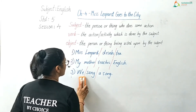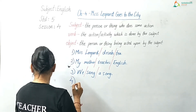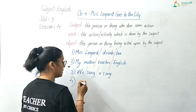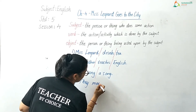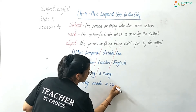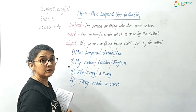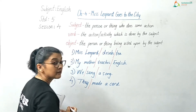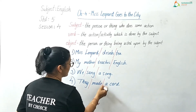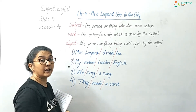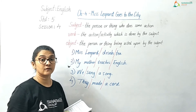Let us go to the fourth sentence: They made a card. Who made a card? 'They' — so 'they' is the subject. They made — so 'made' is the verb. And they made what? A card — so 'a card' is the object.